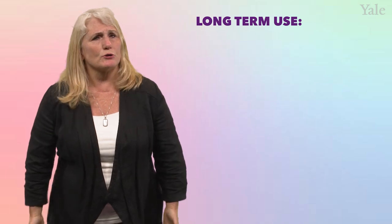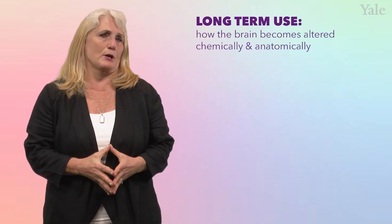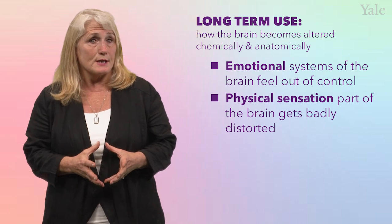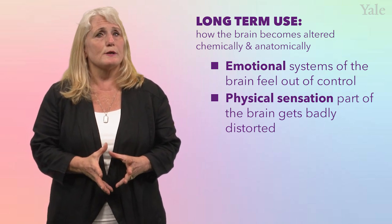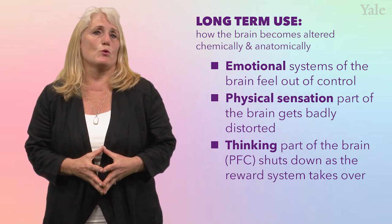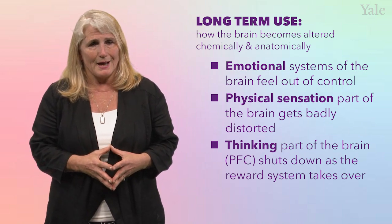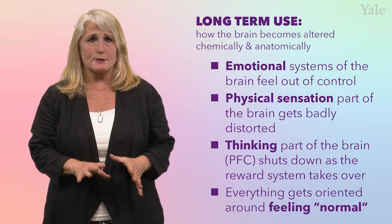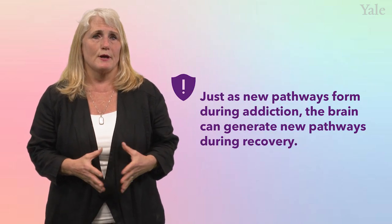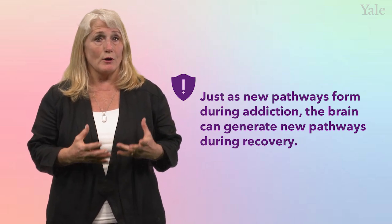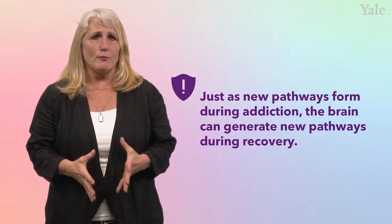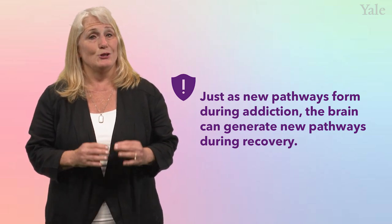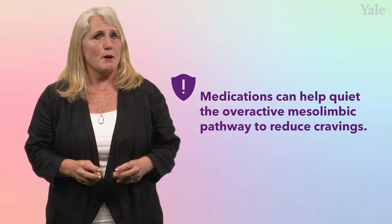What are the consequences of long-term drug use? Sometimes the brain becomes altered chemically and autonomically. The emotional systems of the brain run rampant and feel out of control. The physical sensation part of the brain gets badly distorted. The thinking part — the prefrontal cortex — shuts down as the reward system takes over, and everything gets oriented around just trying to feel normal. But all hope is not lost. Just as new pathways form during addiction, the brain can generate new pathways during recovery. There are evidence-based cognitive, behavioral, and pharmacotherapies available to help recalibrate the neural pathways, both strengthening pathways to the prefrontal cortex and weakening pathways to the reward system.